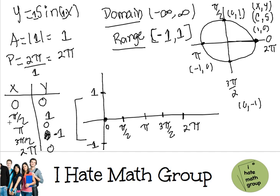0. Then pi over 2 is going to be equals to 1. Pi, 0. 3 pi over 2, this is going to be just negative 1 right here. And then 2 pi is equals to 0.